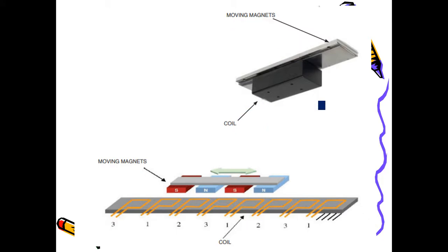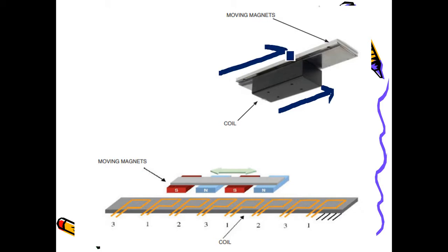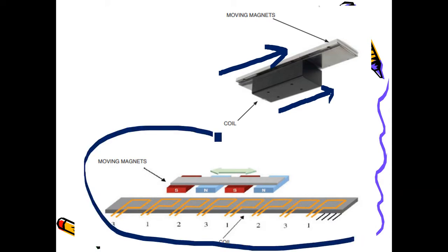The coil is given AC supply, producing varying flux and varying magnetism. The moving magnet moves in response to this varying magnetism. This can be used in conveyor applications. We are going to see the methods of starting synchronous motors in our next class.